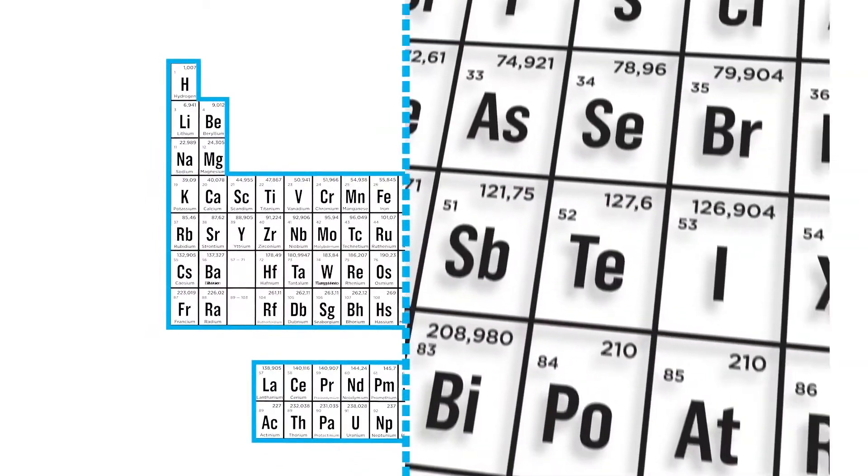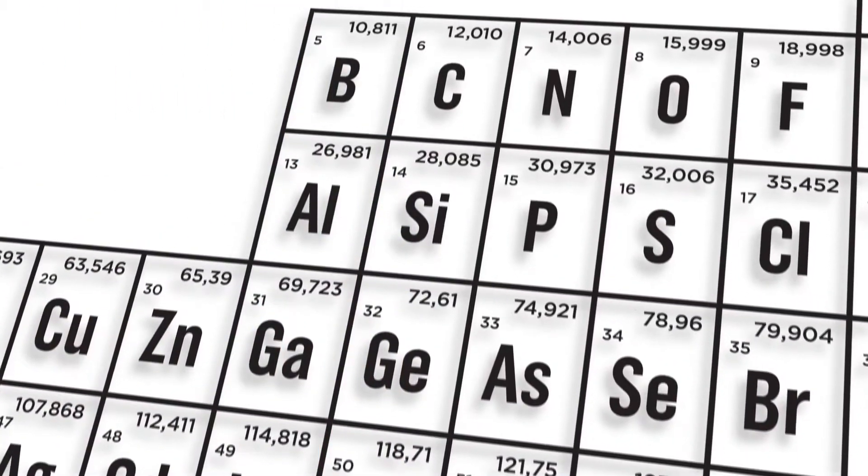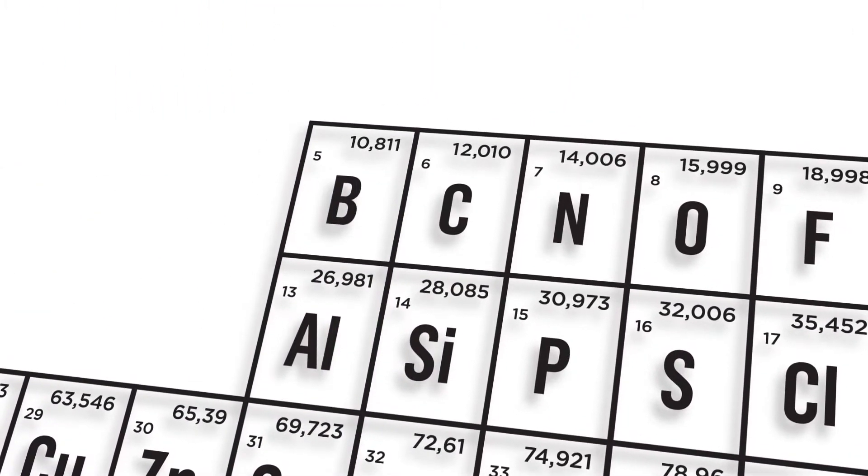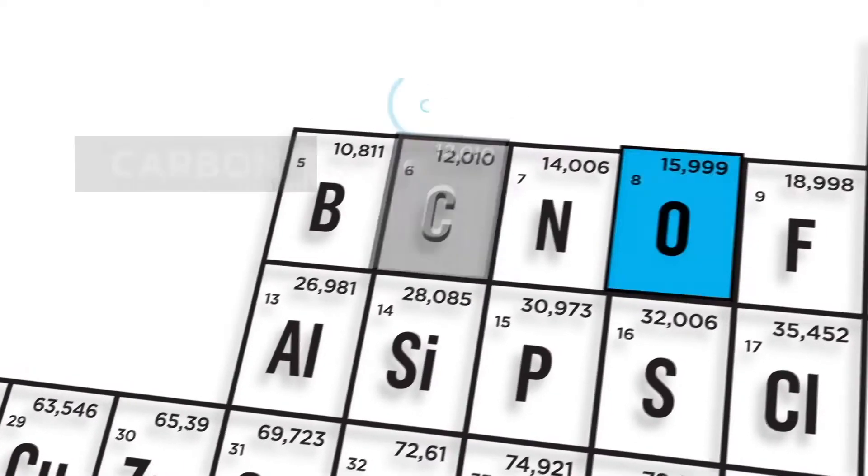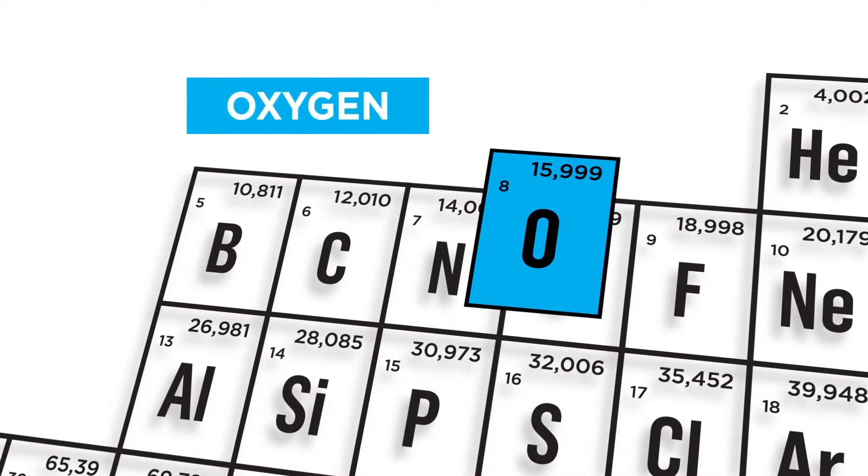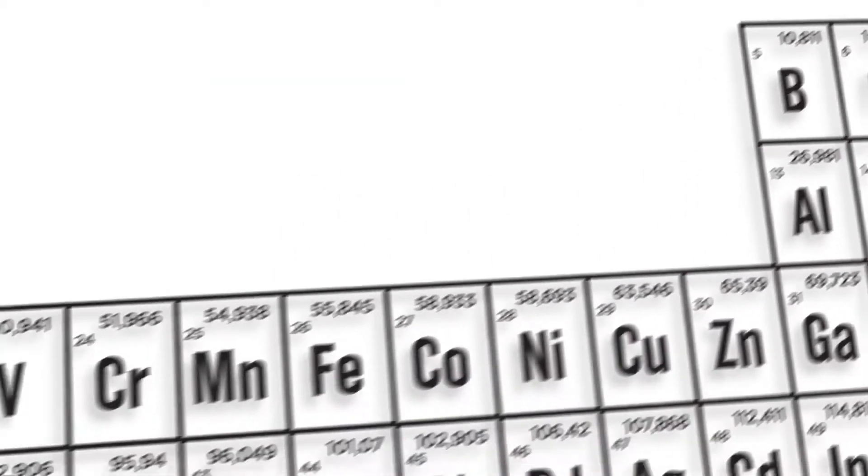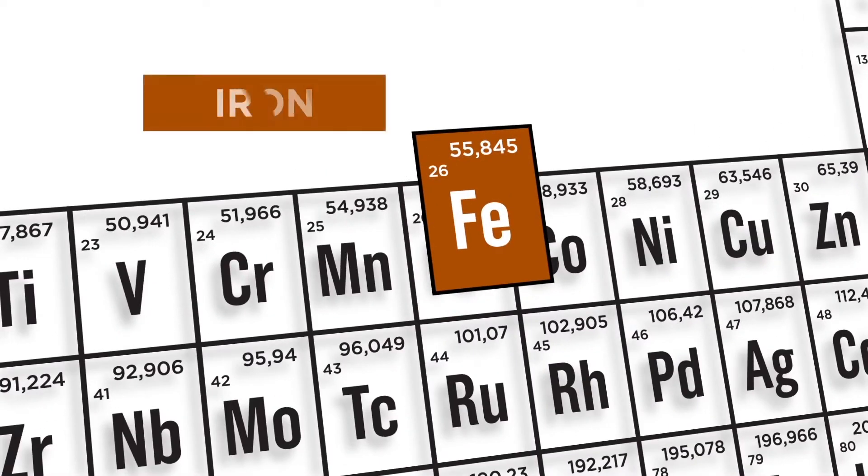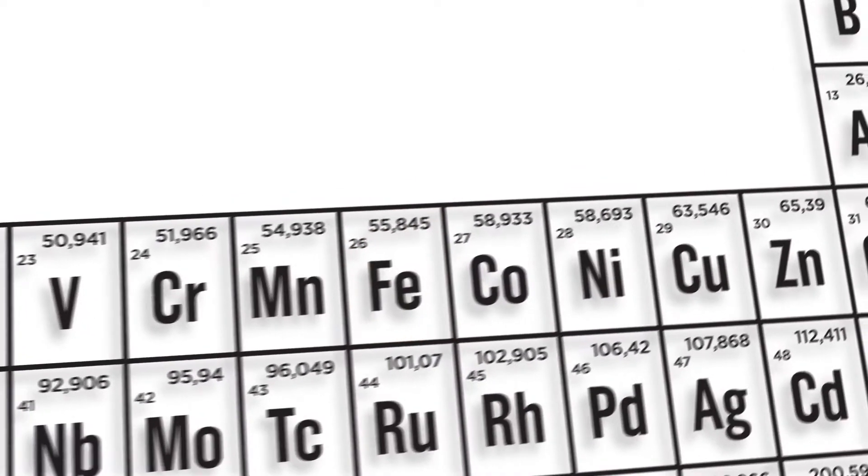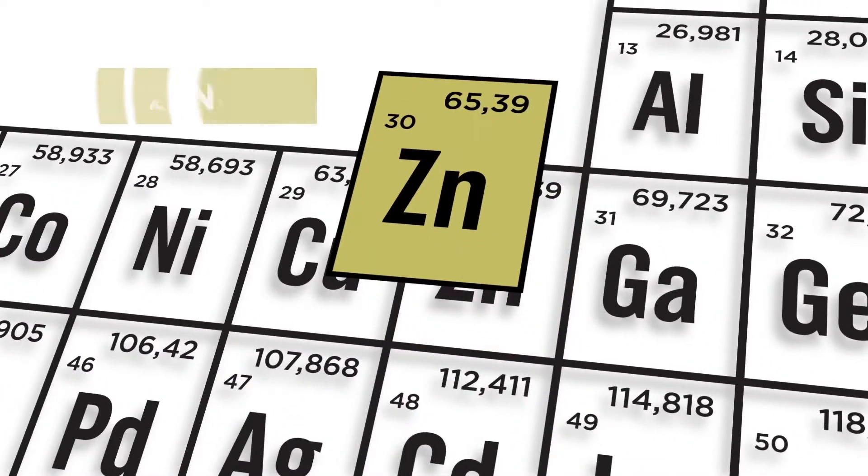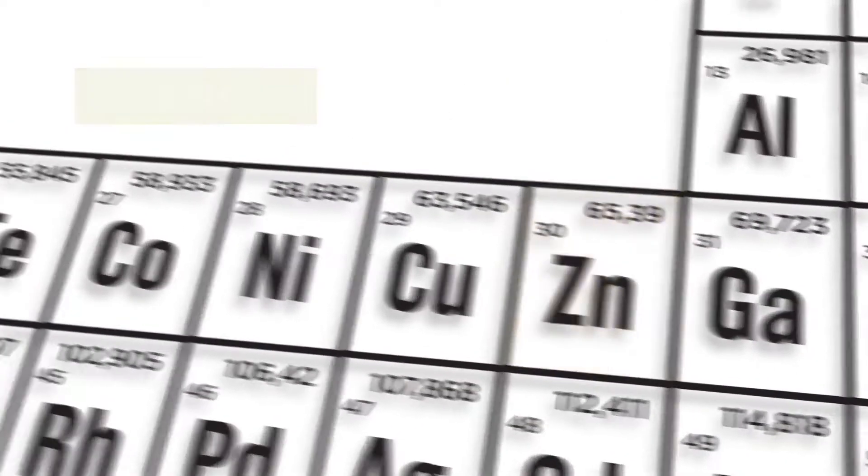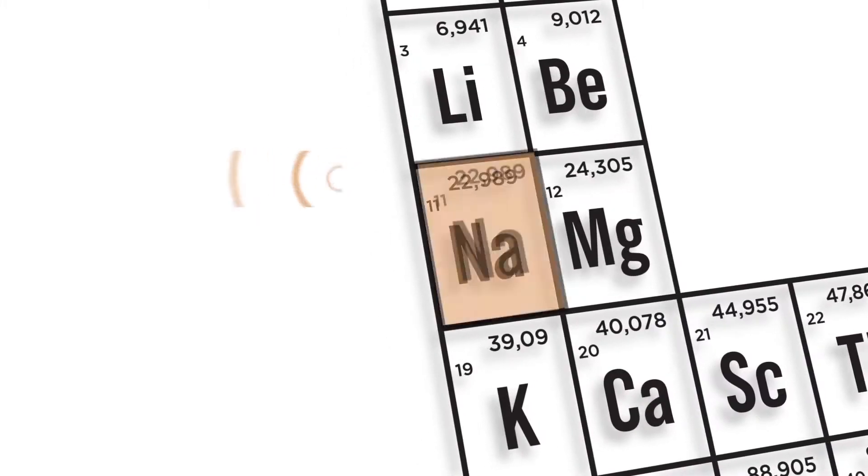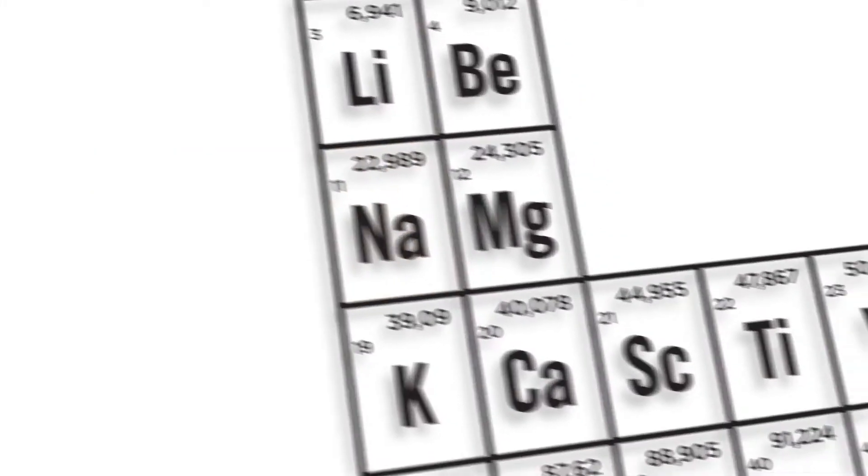Some people know what each of these letters represent. C is the chemical symbol for carbon, O is the chemical symbol for oxygen, the chemical symbol for iron is Fe, Zn is zinc. There are even those who know the chemical symbol for sodium is Na because it comes from the Latin natrium.